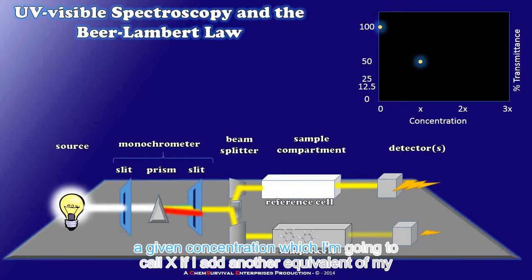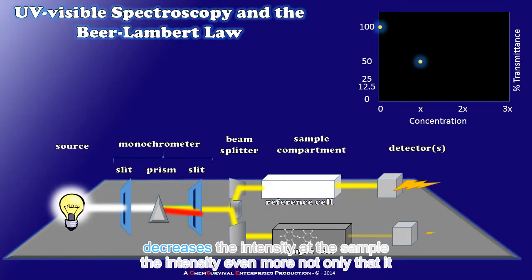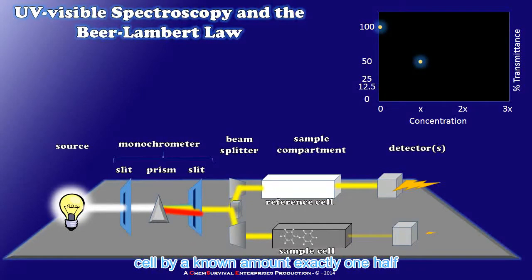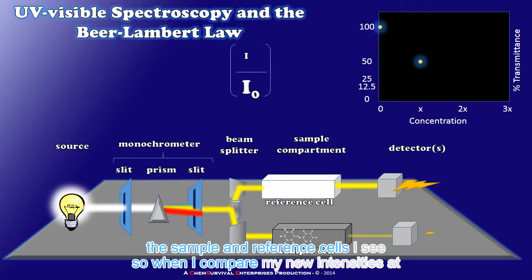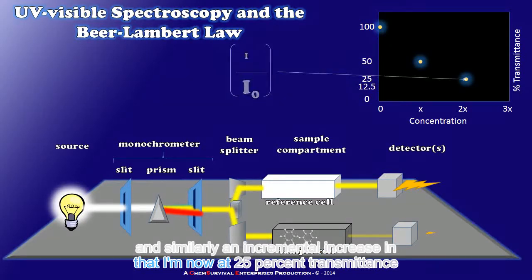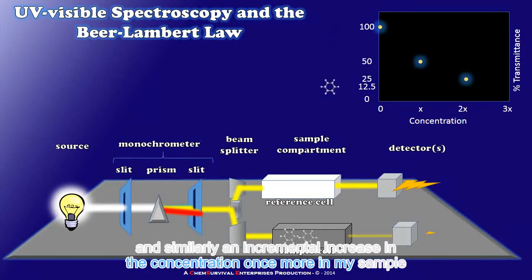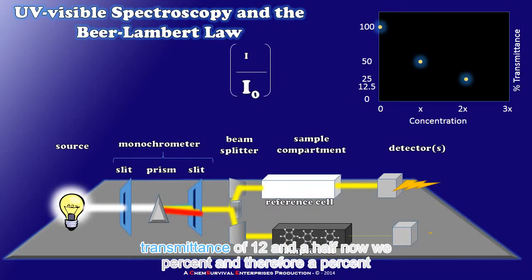If I add another equivalent of my sample to the sample cell that decreases the intensity even more. Not only that it decreases the intensity at the sample cell by a known amount exactly one half for each equivalent of sample that I add. So when I compare my new intensities at the sample and reference cells I see that I'm now at 25% transmittance. And similarly an incremental increase in the concentration once more in my sample cell leads to another reduction by 50% and therefore a percent transmittance of 12 and a half.